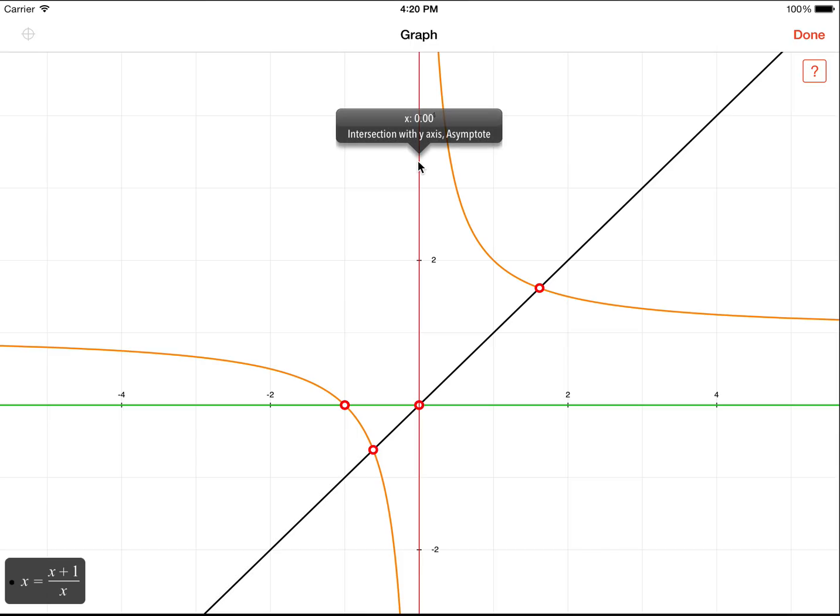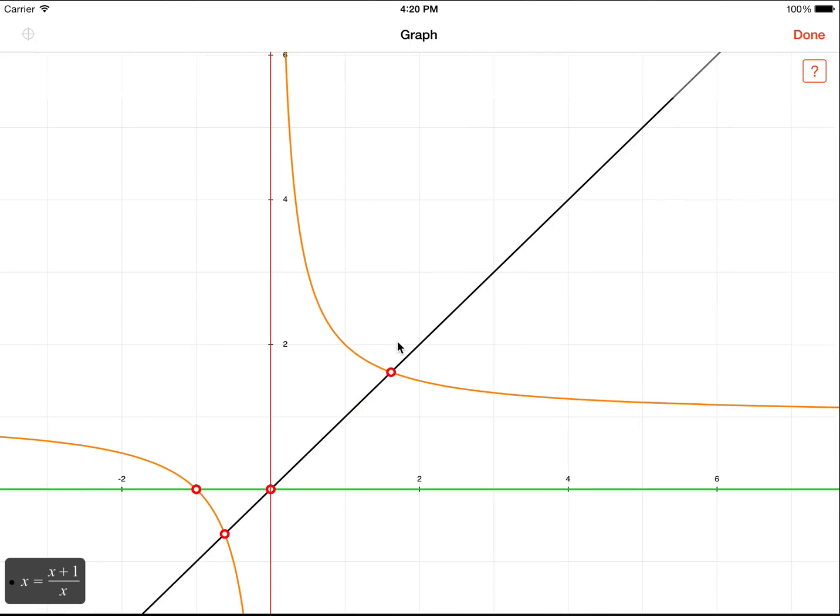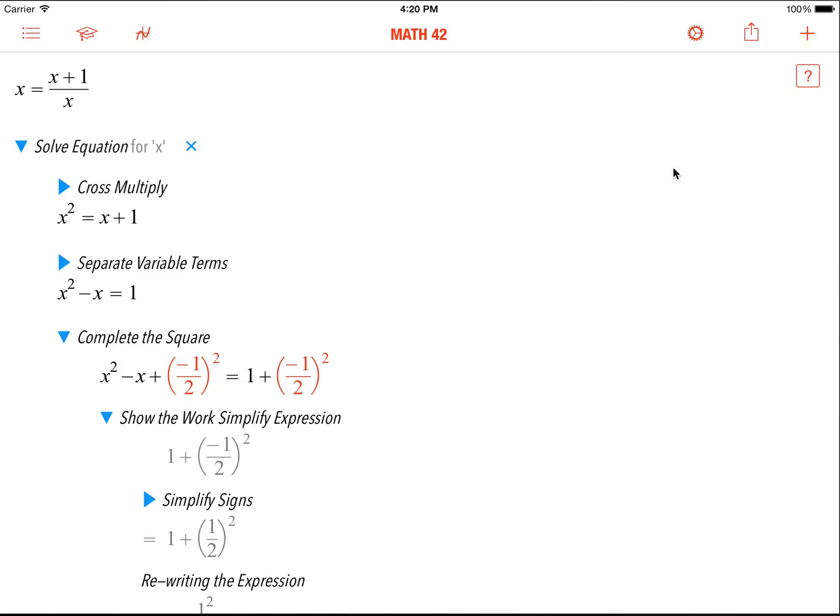And now you mean, oh, there's an asymptote. What is an asymptote? Oh, here's an intersection point. Oh, here's a root, et cetera, et cetera. Always smooth. Always beautiful. Really impressive. That's one part of Math 42.